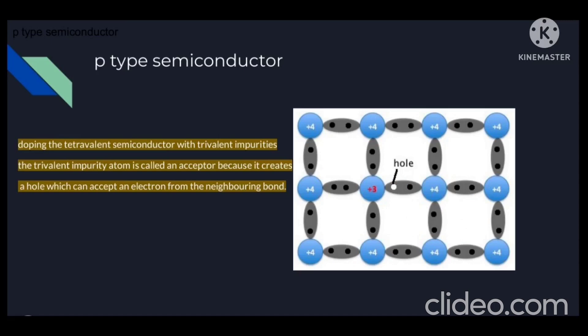The next semiconductor is a P-type semiconductor. When suitable trivalent impurity is added to a pure crystal — for example, a germanium crystal or a silicon pure crystal — we get an extrinsic semiconductor, and that extrinsic semiconductor is known as P-type semiconductor. In this case, the trivalent impurity atom, which has three valence electrons, is added. The trivalent impurity atom is also known as the acceptor atom because it creates a hole which can accept an electron from the neighboring bond.